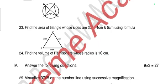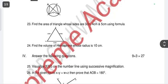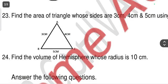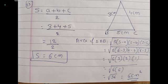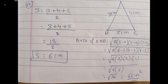Question 23: find the area of a triangle with sides 3 cm, 4 cm, and 5 cm using Heron's formula. First, s = (a + b + c)/2 = 12/2 = 6. Area = √(s(s−a)(s−b)(s−c)) = √(6 × 3 × 2 × 1) = √36 = 6. So the area of the triangle is 6 square centimeters.